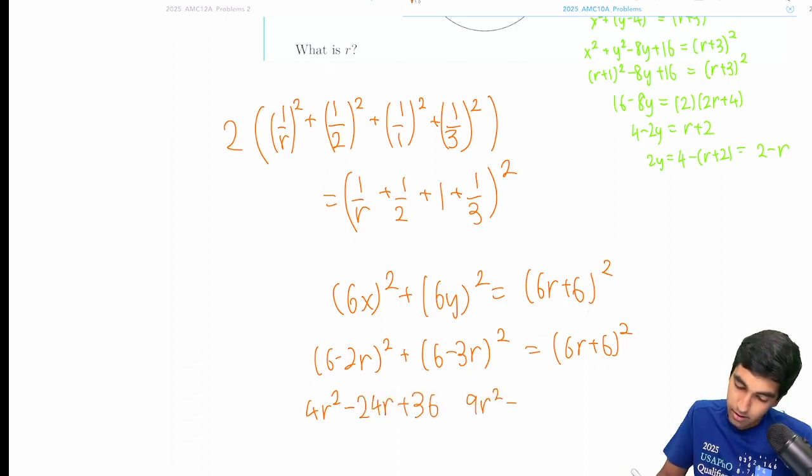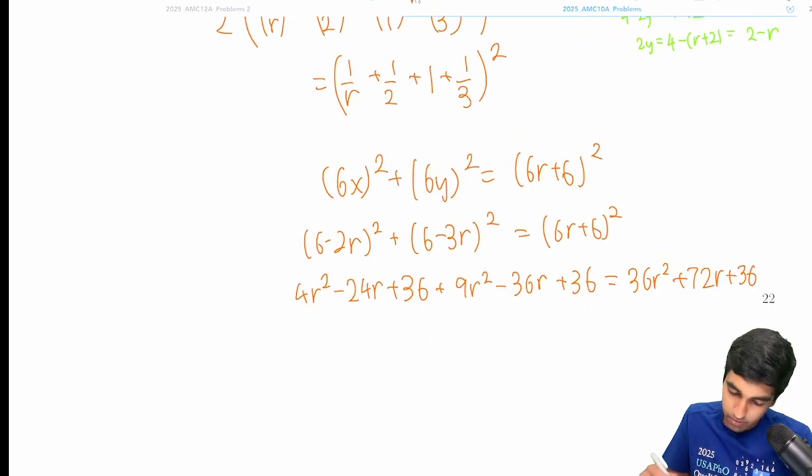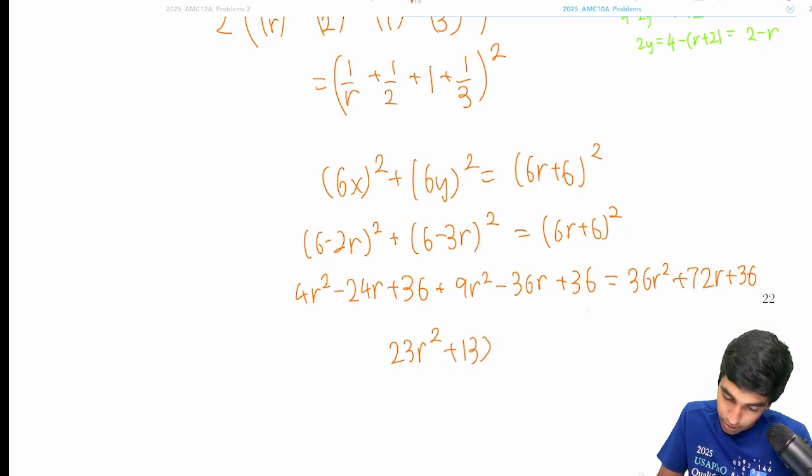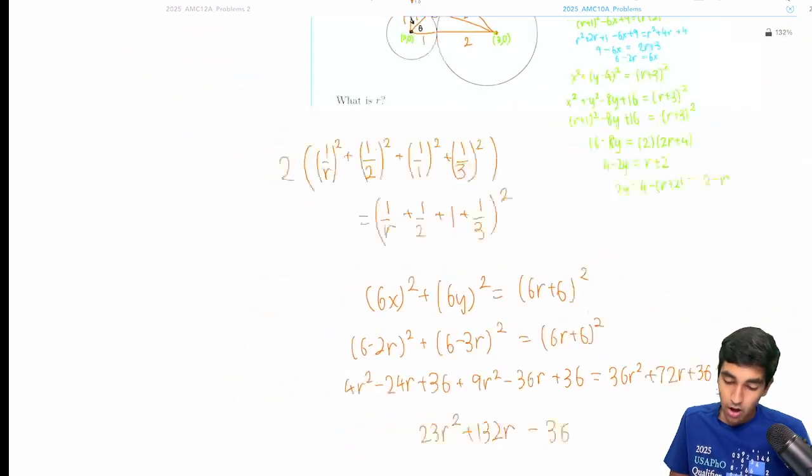36r squared plus 72r plus 36. So we just move terms. We get 23r squared plus 132r minus 36. Let's just double check here. We don't want to mess up. Add 6r to both sides, minus 13r squared to both sides and minus 72 to both sides. This looks good.